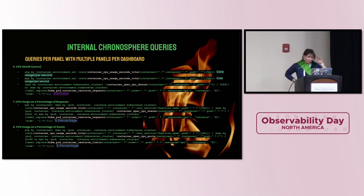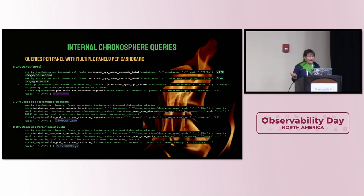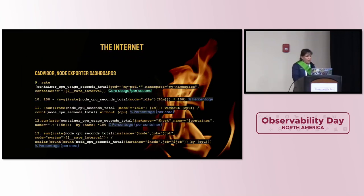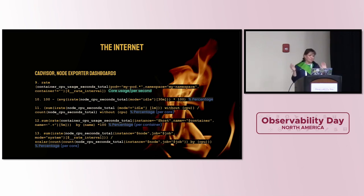Here are the internal Chronosphere queries. If you notice, we have multiple panels for CPU and multiple queries per panel. Again, this wasn't an easy question to figure out — what is the CPU query to rule them all? You'll see we have rates, core usage per second, some percentages comparing usage to resource requests or container resources. We have some OR statements in ours because of some dev autonomy UIs where we auto-detect some of your metrics, so we create queries that depend on what metrics we're pulling from. That way we can get queries out of the box without you figuring out what queries you need.